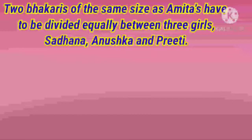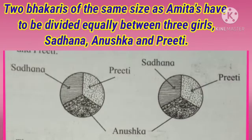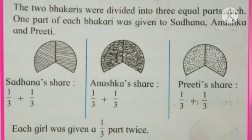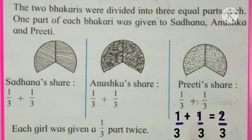Next, two Bhakris of the same size as Amita's have to be divided equally between three girls: Sadhana, Anushka and Priti. Two same-size Bhakris are there and they have to be divided among three friends. The two Bhakris were divided into three equal parts each. One part of each Bhakri was given to Sadhana, Anushka and Priti. So Sadhana's share is one upon three plus one upon three, Anushka's share is one upon three plus one upon three, and Priti's share is also one upon three plus one upon three. Each girl was given a one-third part twice — one upon three plus one upon three means two times one upon three.